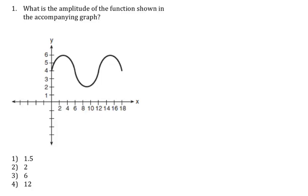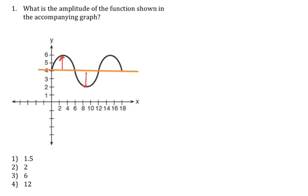Let's look at some review questions on trig graphs. For the first one, what is the amplitude of the function? Amplitude is measured from the middle — the middle appears to be at four, and you can see that you're going up and down by two units, so our amplitude will be two.